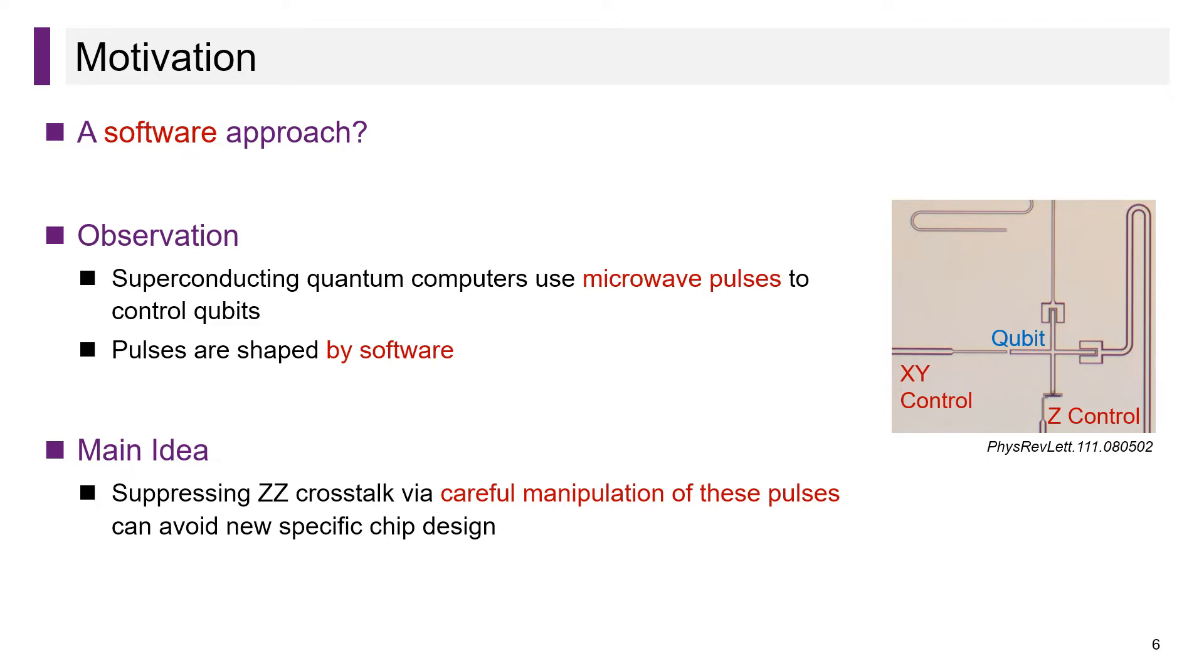We find that superconducting quantum computers always use microwave pulses to control qubits. As shown in the figure, there are X, Y, and Z control lines transmitting pulses to the qubit. These pulses are shaped by software, so we expect to suppress ZZ crosstalk by optimizing the pulses.